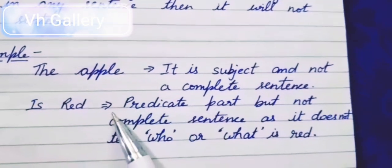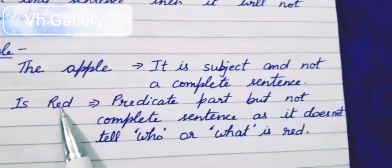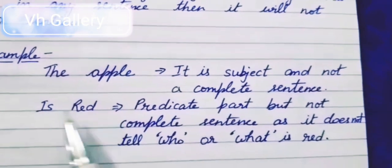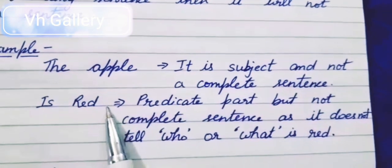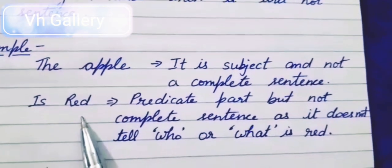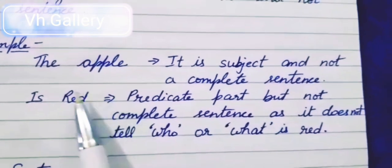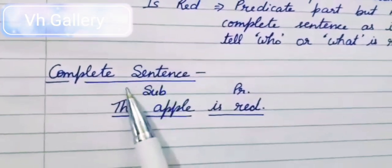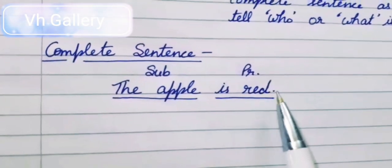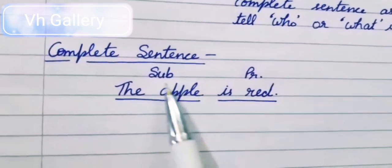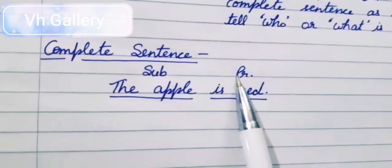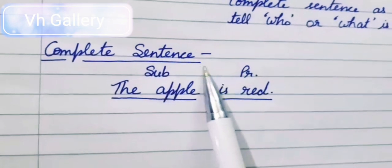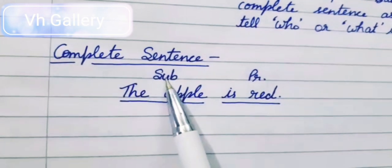The apple and 'is read' are not sentences — these are only words. 'Is read' doesn't tell us who or what is read. That means it is not a complete sentence. So what is a complete sentence? A complete sentence is 'The apple is red,' in which 'the apple' is the subject and 'is red' is the predicate. A complete sentence is the combination of subject and predicate.